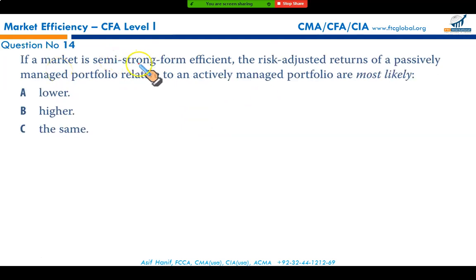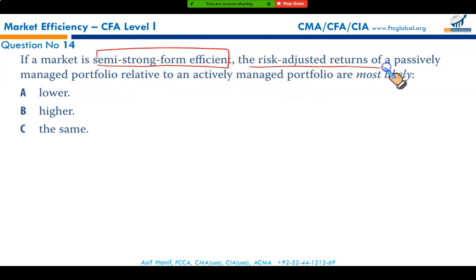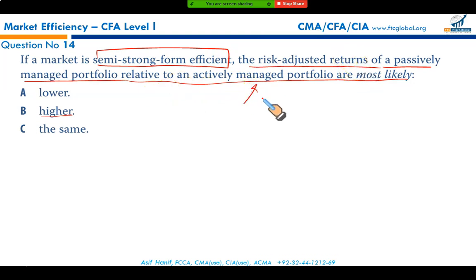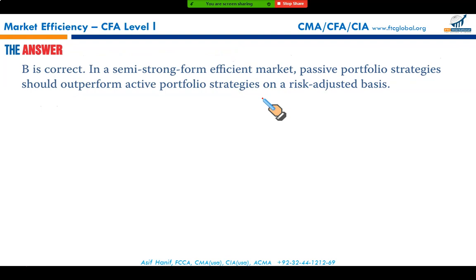If the market is semi-strong form efficient, the risk-adjusted return of a passively managed portfolio relative to an actively managed portfolio is most likely to be higher. Because you avoid transaction costs and management fees, passive portfolio management returns will be more than those of an actively managed portfolio, making option B the correct answer.